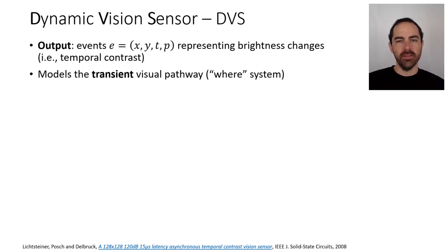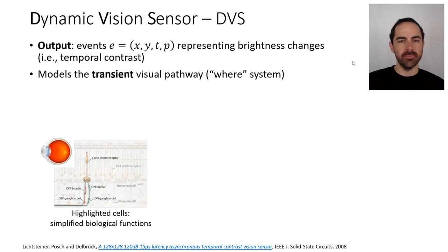This sensor models the transient visual pathway, that is the Where system. If this is a view of the cells in the retina, the human retina, then the DVS models the highlighted ones — so not all of them.